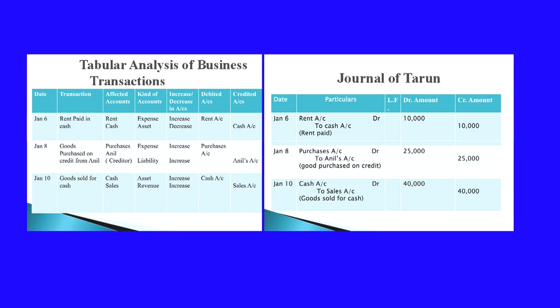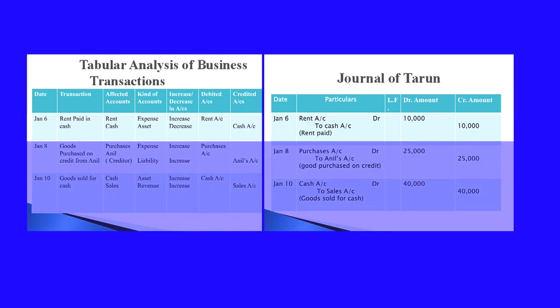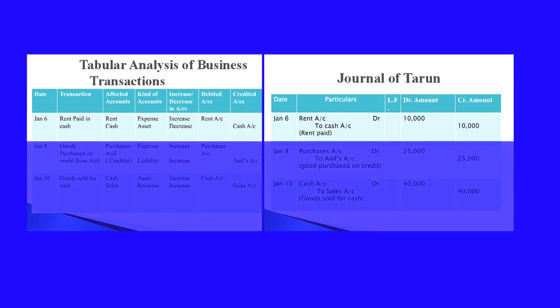On January 6th: rent paid in cash. Rent and cash are the two affected accounts. Rent comes under expense; cash comes under asset. Rent paid means expenses are increasing — rent being an expense account is increasing. Cash is going from the business, so cash is decreasing. Applying the rule: when expenses increase, you debit, so rent account is debited. When asset account decreases, you credit, so cash account is credited.